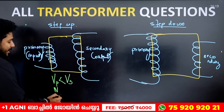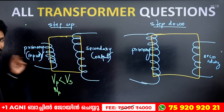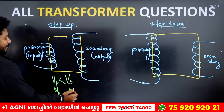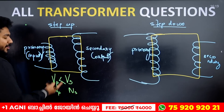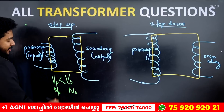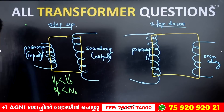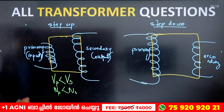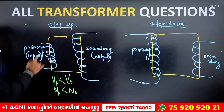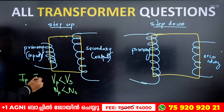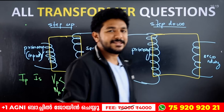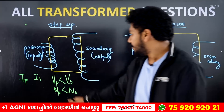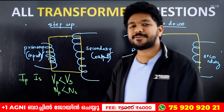When NP is the number of turns in the primary, and NS is the number of turns in the secondary, voltage is proportional to the number of turns. The current is primary and the current is secondary — current is inversely related to voltage.